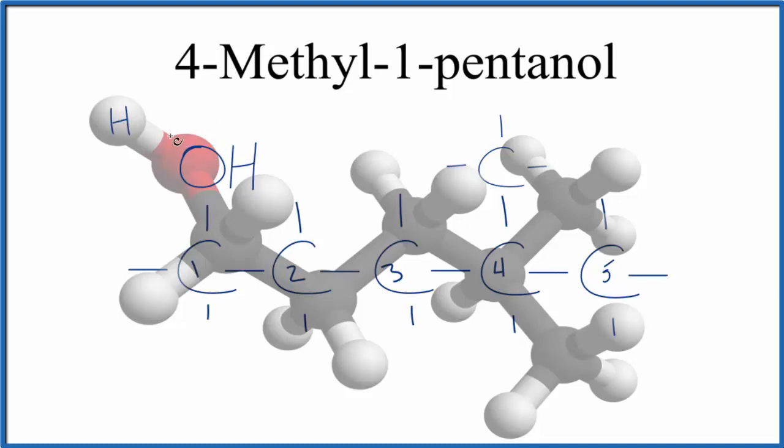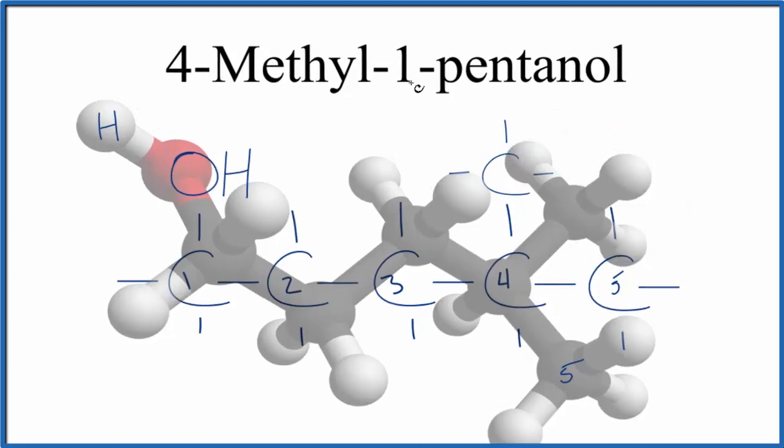So one pentanol, and we have one, two, three, four, and the fifth one, this is our fifth carbon here, is down here. On the fourth carbon, this right here, that's our methyl group. So that's the structure for four methyl, one pentanol.